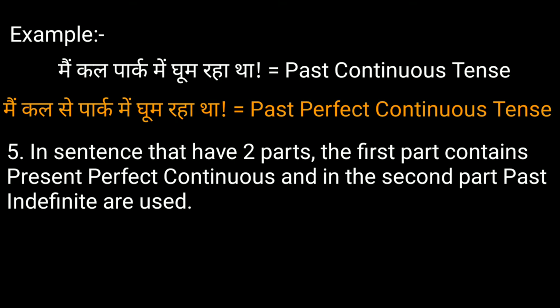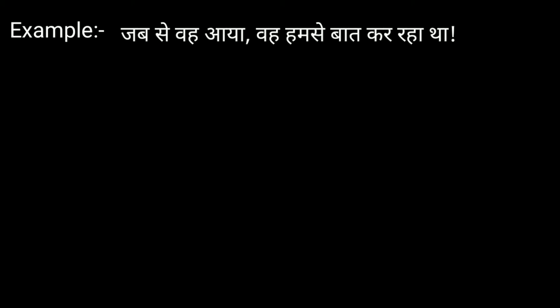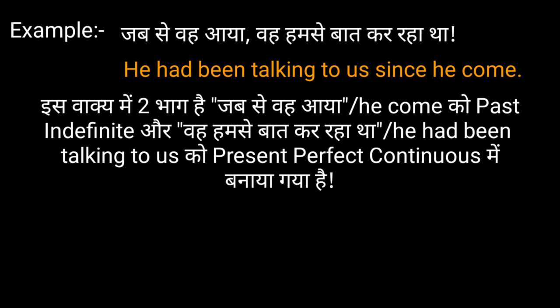Number five: in sentences that have two parts, the first part contains past perfect continuous and the second part uses past indefinite. ऐसे वाक्य में जिनके दो भाग होते हैं, पहले भाग में past perfect continuous और दूसरे भाग में past indefinite का प्रयोग होता है. For example, जब से वह आया, वह हमसे बात कर रहा था — He had been talking to us since he came. इस वाक्य में 'वह आया' को past indefinite और 'वह हमसे बात कर रहा था' अर्थात He had been talking to us को past perfect continuous में बनाया गया है.